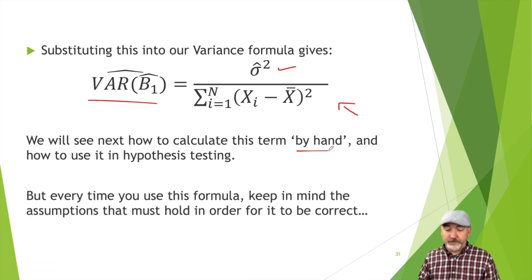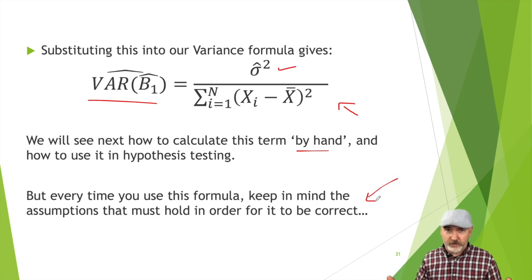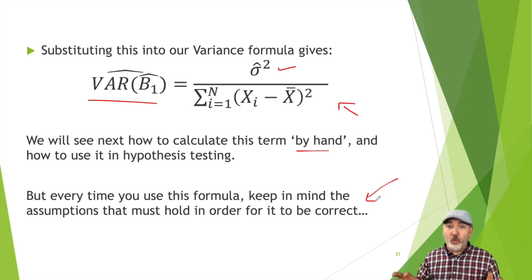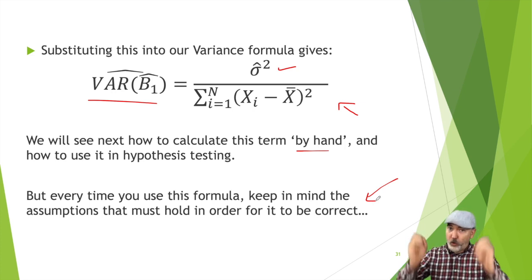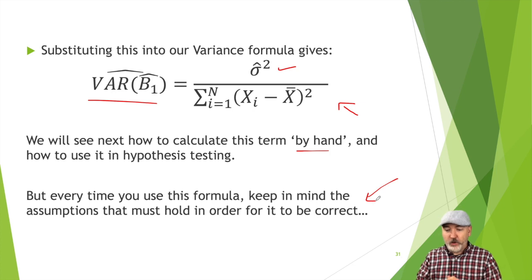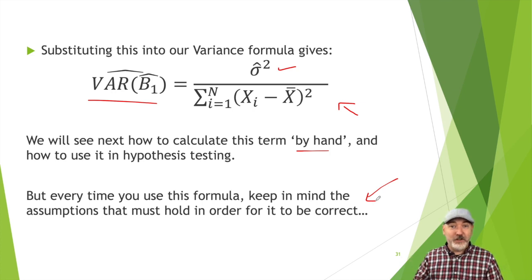All we have to do now is replace sigma squared with sigma-hat squared, giving us the estimated variance of B1 hat: sigma-hat squared divided by sum(x - x̄)². Next we'll walk through a small data set by hand to make this calculation and turn it into a standard error for hypothesis testing. But don't lose sight of the lesson here: this formula is sitting on top of a house of cards — the Gauss-Markov assumptions. Pull out any one assumption and the whole thing collapses.